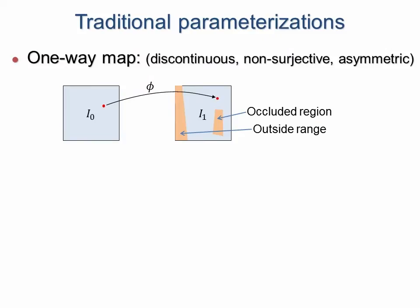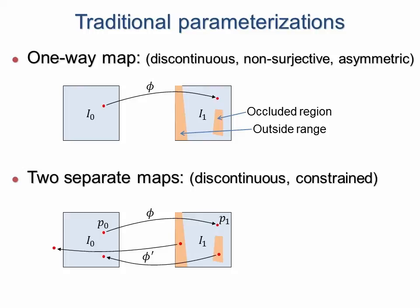Traditional approaches construct a map from one image to the other, but this leaves occluded regions undefined. Due to this asymmetry, a reverse map is often necessary, but maintaining consistency requires expensive bookkeeping.